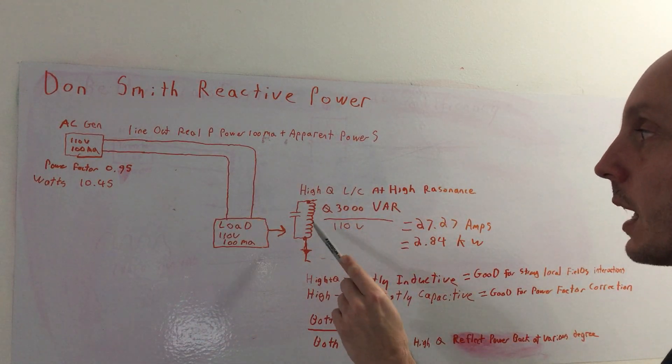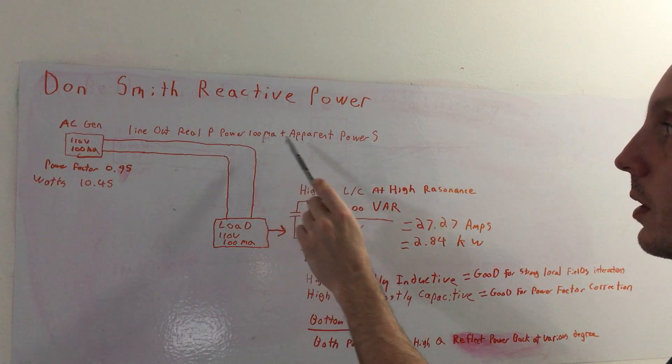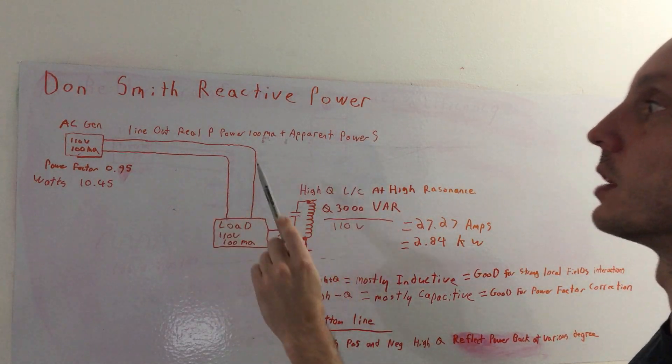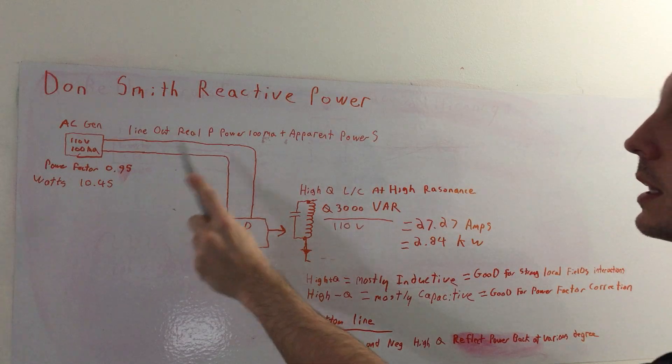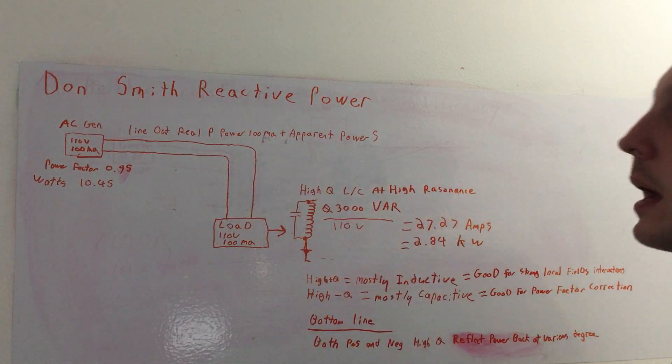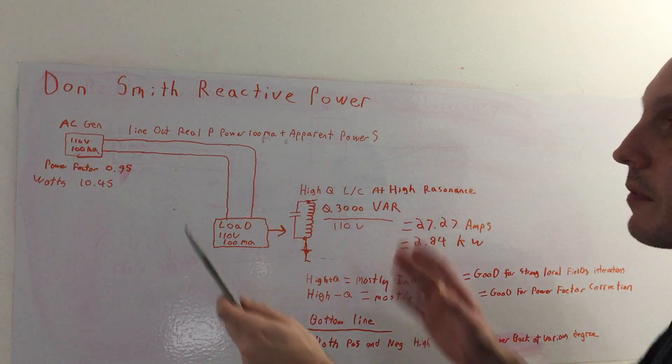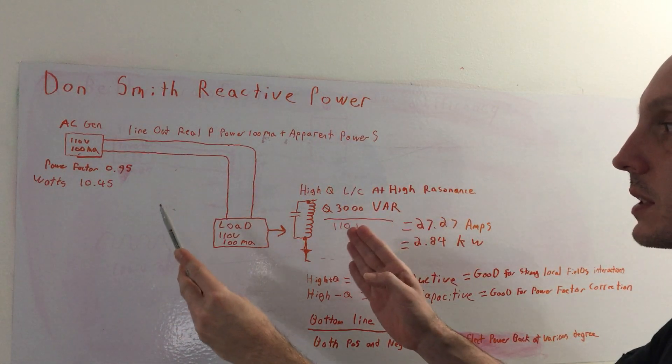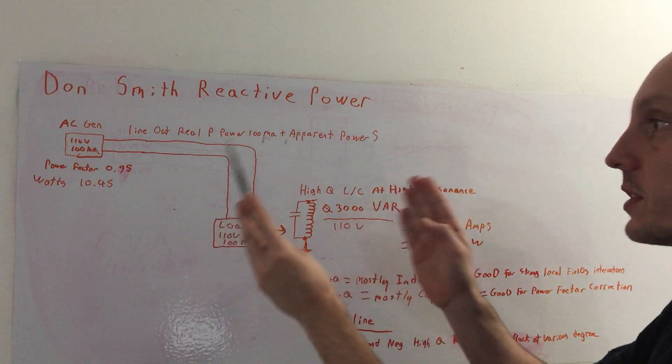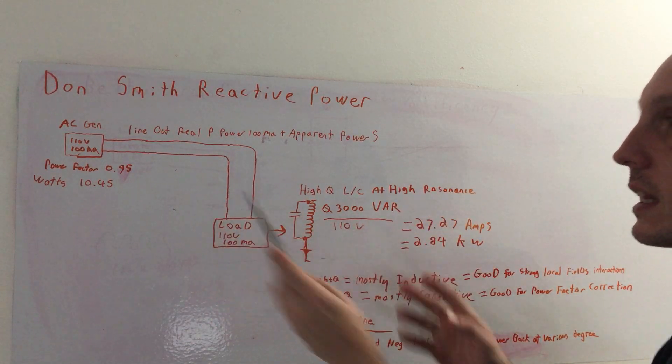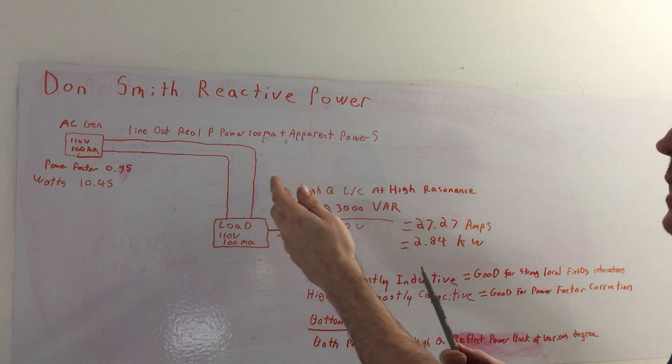But needless to say, the apparent power is what comes out on the line. So the line has to accommodate for real power plus the apparent power. Now in very linear mains AC systems, what we have is perfectly symmetrical systems with symmetrical transformers. Everything is symmetrical with the line. So they can calculate this.